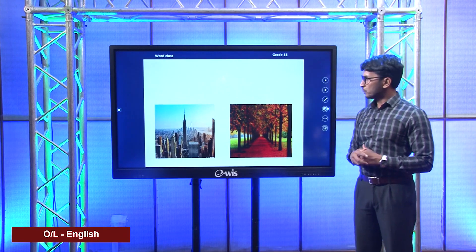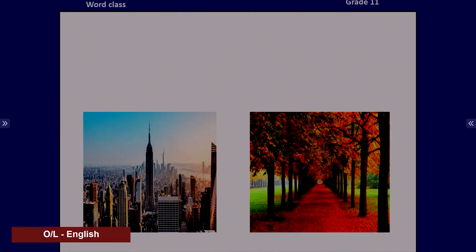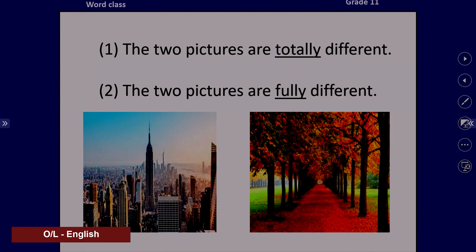Now look at these two pictures. Are they similar or different? Of course they are different. Let's see these two sentences: The two pictures are totally different. The two pictures are fully different. What do you think is the most appropriate one? Yes, it's the first one — the two pictures are totally different. We never say fully different.